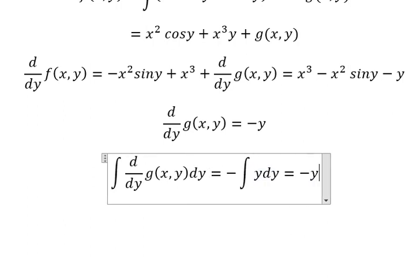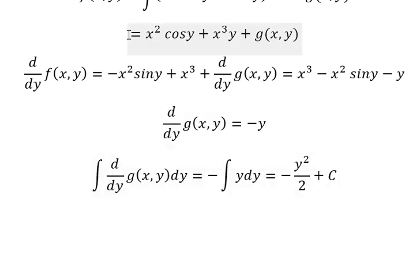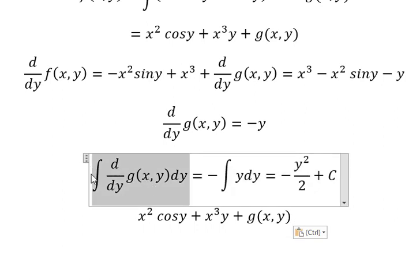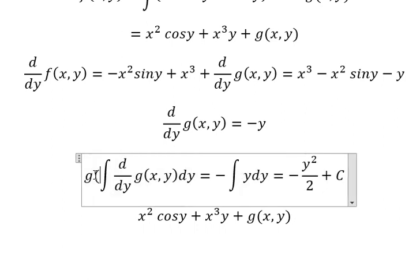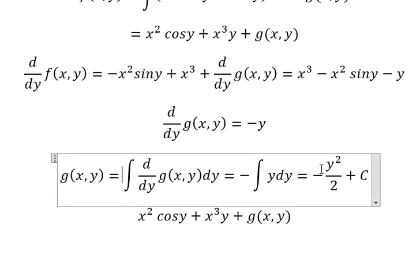We put the integration for both sides. So we have g(x,y) equals the integral of -y dy, which equals -y²/2 plus C. So we go back here. The integration of this one gives us g(x,y), so f(x,y) = x² cos y + x³y + g(x,y).